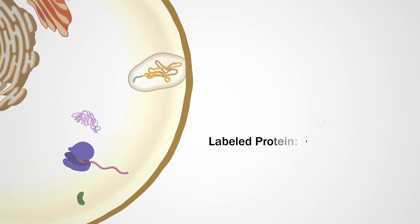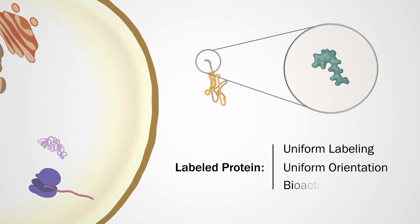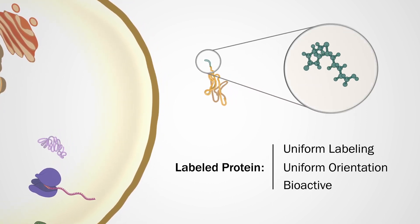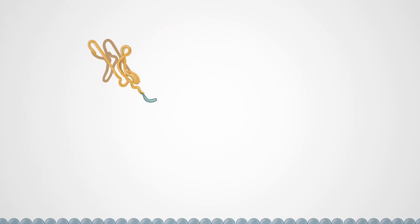Site-specific labeling allows for uniform protein orientation when binding to a streptavidin surface. Restricting biotinylation to the aviTag means that the protein is left mostly unchanged and potential binding sites remain available.